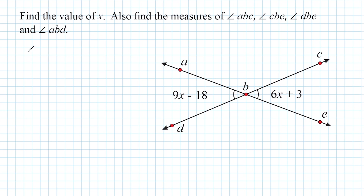So let's start by writing that 9X minus 18 is equal to 6X plus 3. Whenever you have a pair of intersecting lines, you're going to have vertical angles — those are the angles directly on the opposite sides of each other — and they are going to be congruent.